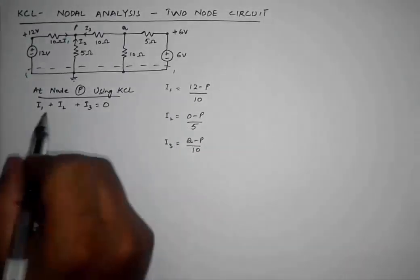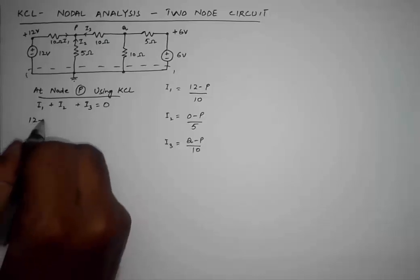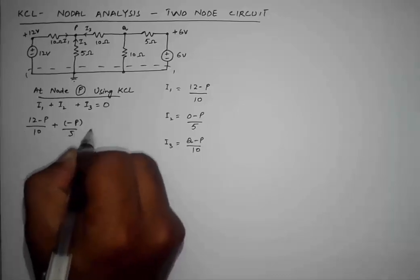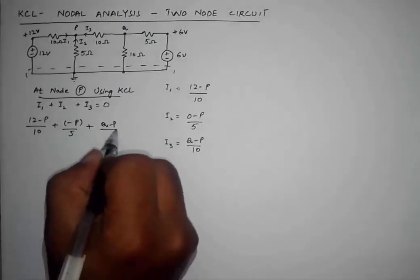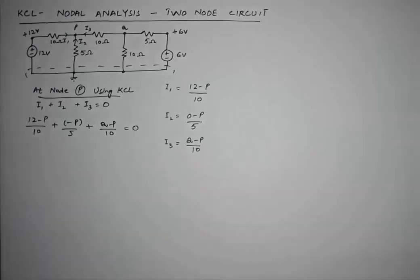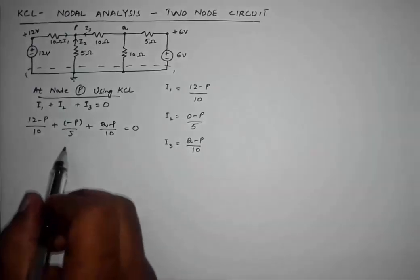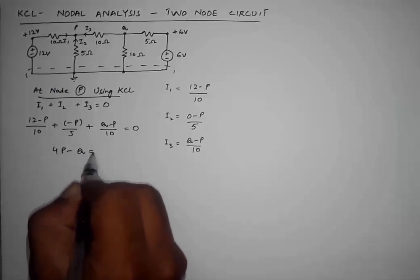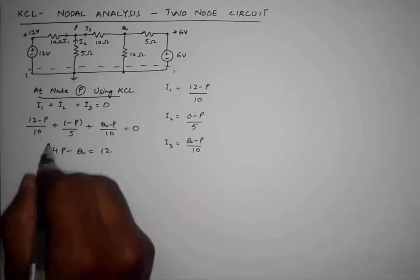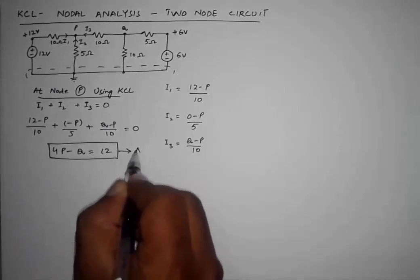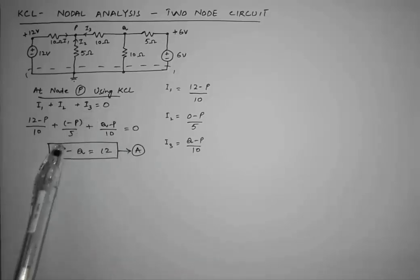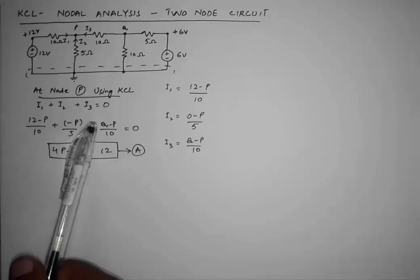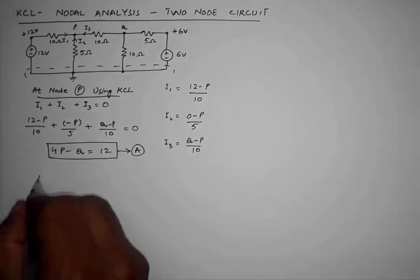Substituting these into the KCL equation at node P: (12 − P)/10 + (−P)/5 + (Q − P)/10 = 0. After simplifying by taking the LCM and combining terms, we get the equation: 4P − Q = 12. Let's name this Equation A.